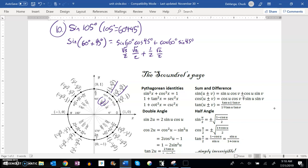And then from there I can do a little bit of arithmetic. Root 3 times root 2 is root 6, 2 times 2 is 4, 1 times root 2 is root 2, 2 times 2 is 4. So this would be the same as root 6 plus root 2 over 4.